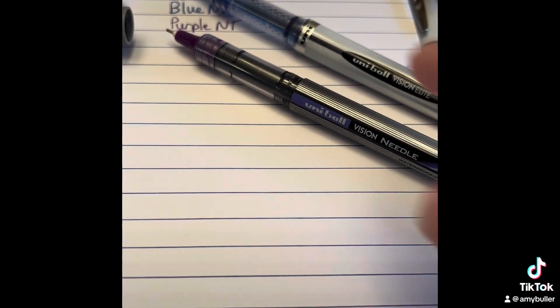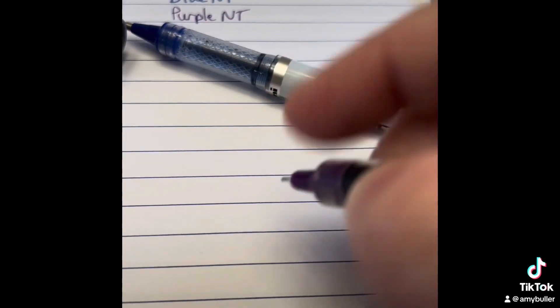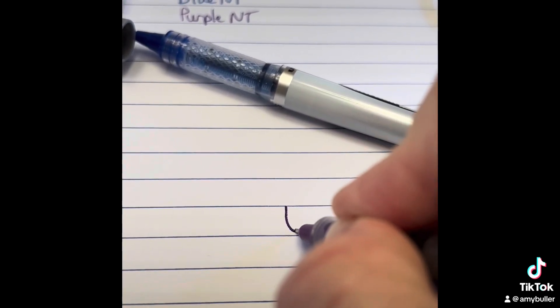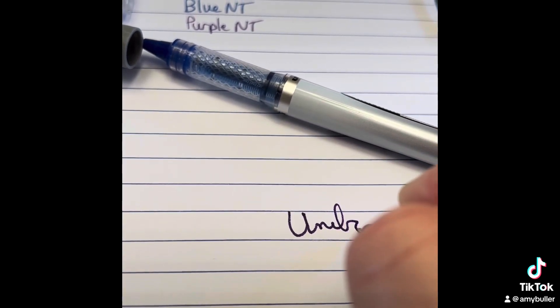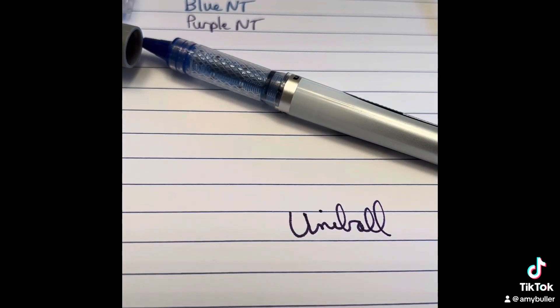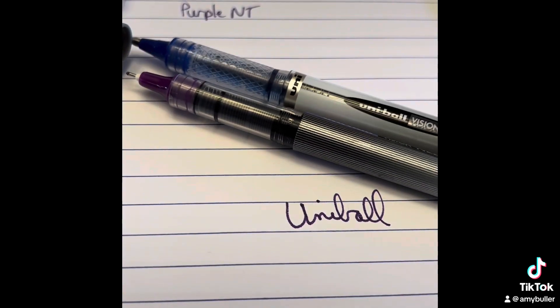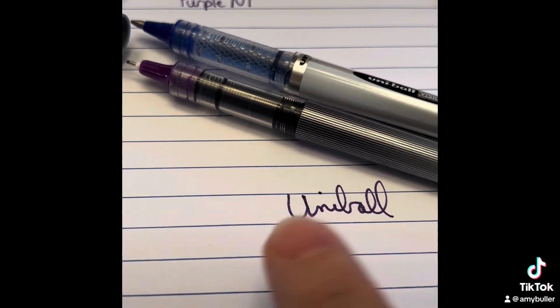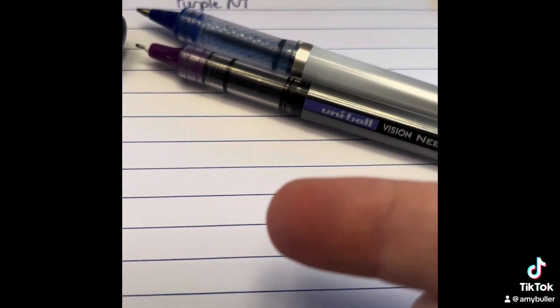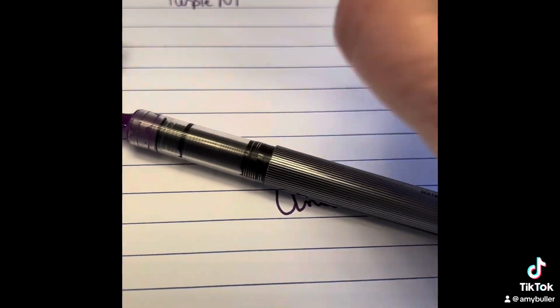And now for the question of how do the pens write. So we will try the needle tip first. It's very smooth. The ink flows very nicely and doesn't skip and there's no smearing. So let's try the regular tip.